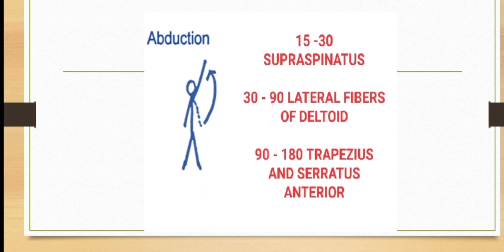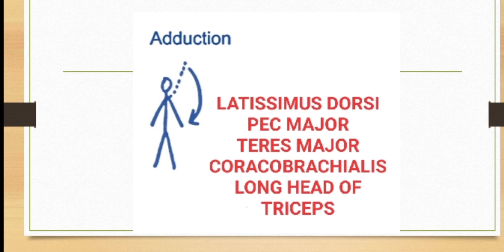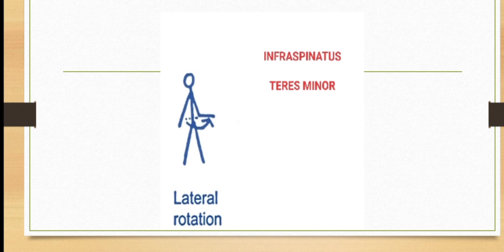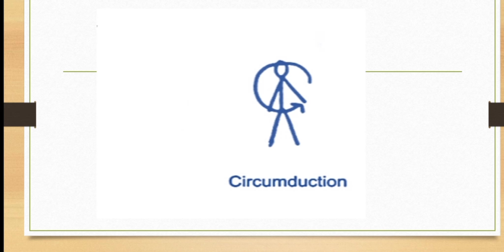Adduction of the joint is done by five muscles: latissimus dorsi, pectoralis major, teres major, coracobrachialis, and the long head of the triceps. Medial rotation is performed by the subscapularis and teres major. Lateral rotation is done by the infraspinatus and teres minor. Finally, 360-degree circumduction is possible in the sagittal plane. A tabular column of shoulder joint movements and their corresponding muscles is also provided.